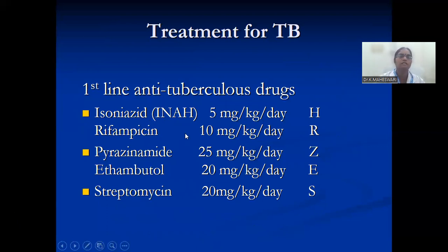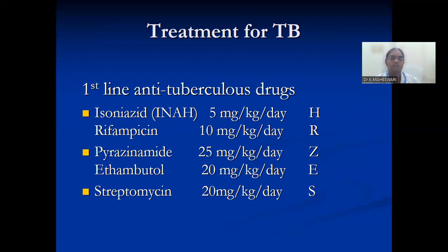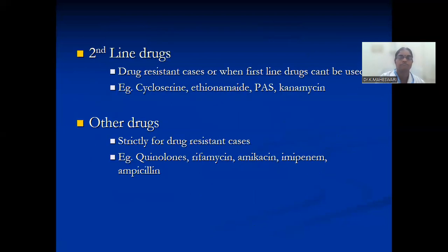Treatment of TB: commonly used drugs — INH 5 mg/kg/day, Rifampicin 10 mg/kg/day, Pyrazinamide 25 mg/kg/day, Ethambutol 20 mg/kg/day, and Streptomycin 20–30 mg/kg/day. Short forms: INH = H, Rifampicin = R, Pyrazinamide = Z, Ethambutol = E, Streptomycin = S. Second-line drugs used in drug-resistant cases include cycloserine, ethionamide, PAS, and capreomycin. Other drugs strictly for drug-resistant cases include quinolones, kanamycin, amikacin, imipenem, and ampicillin.